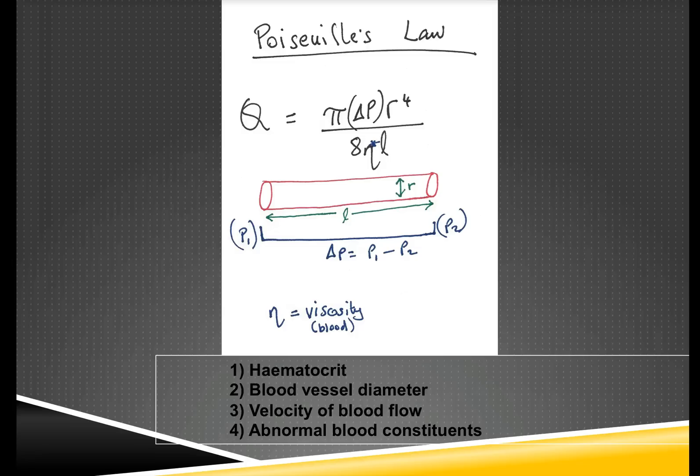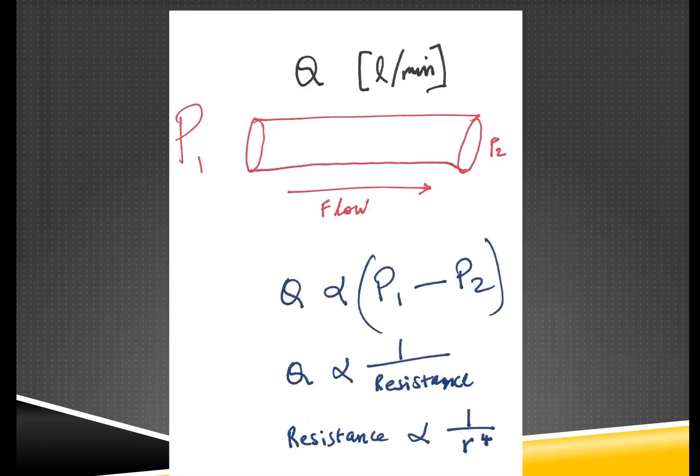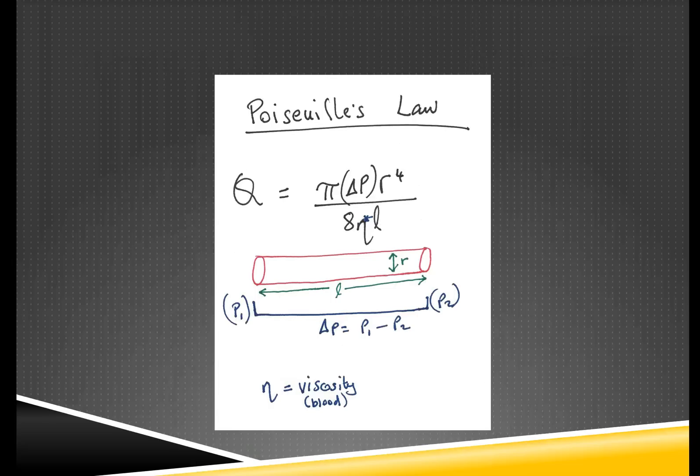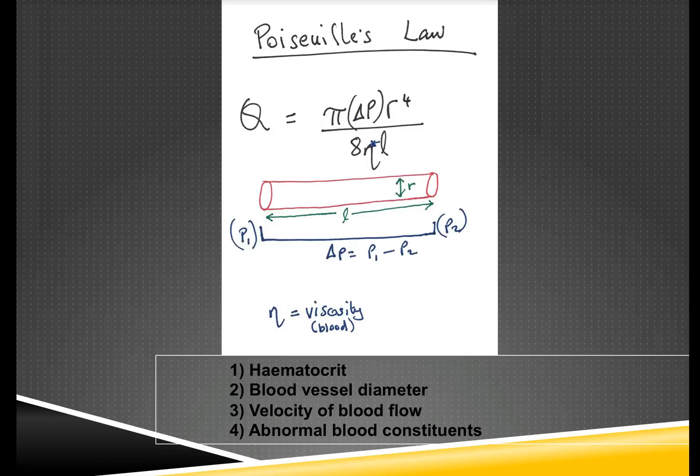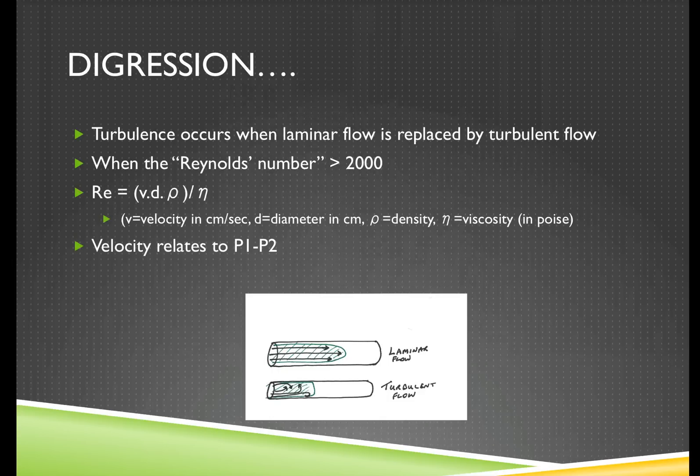Moving on to the other factors in Poiseuille's law that define flow, we're going to look at the viscosity. There are four main determinants that I'm going to discuss with you of viscosity: hematocrit, blood vessel diameter, the velocity of the flow, and abnormal blood constituents. Just a slight digression before we get on to this.